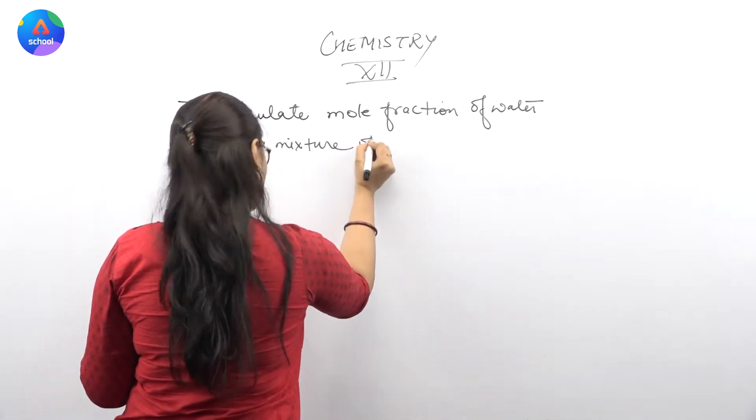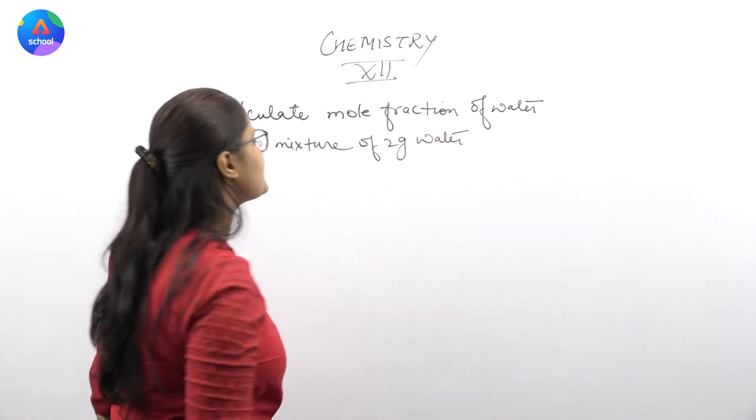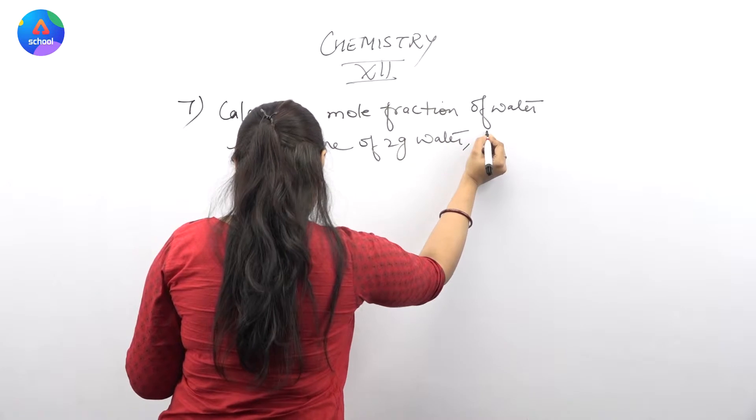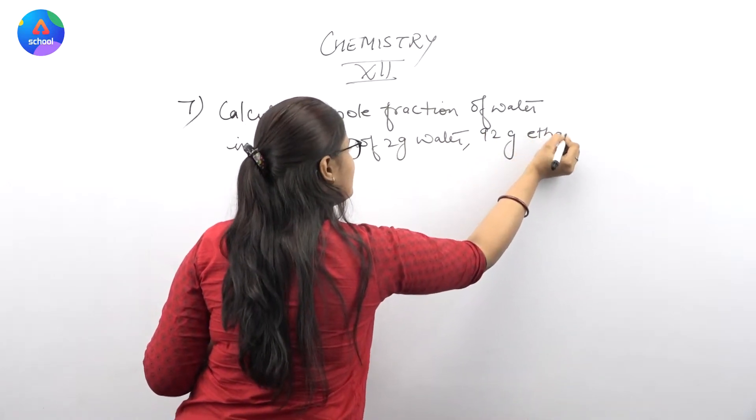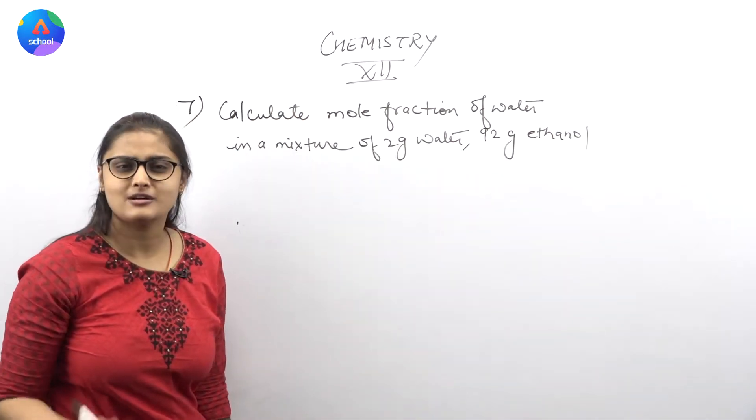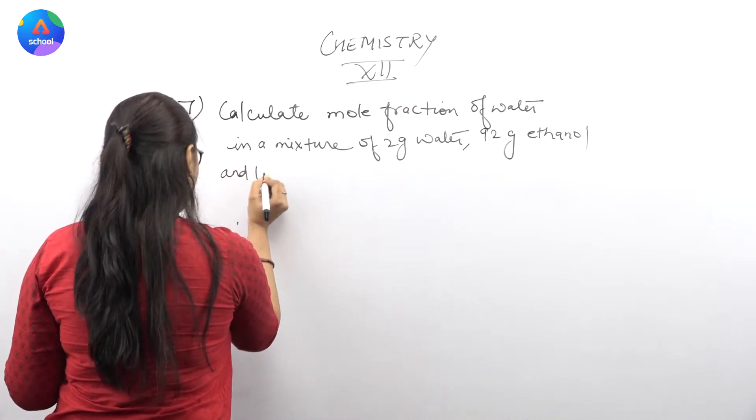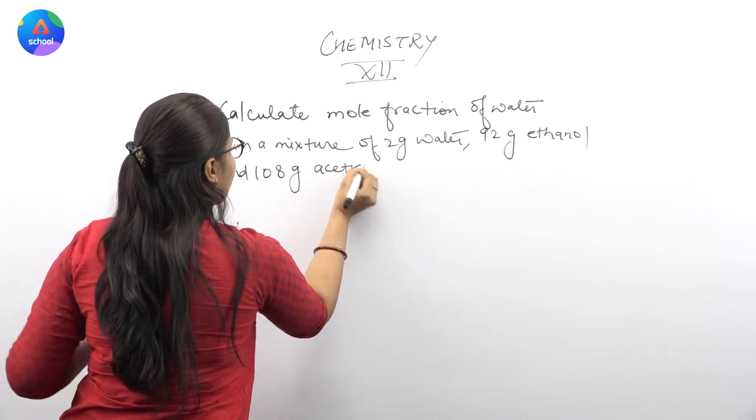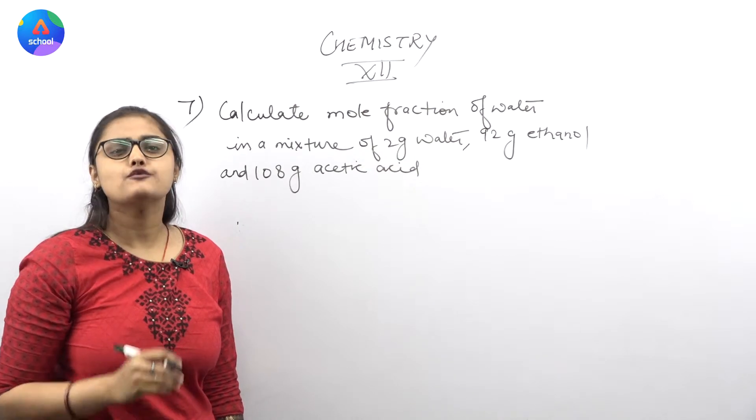2 gram water. Clear here that you have 2 grams water, 92 gram ethanol C2H5OH, and 108 gram acetic acid. Now tell us what the formula is. Basically, acetic acid formula is CH3COOH.